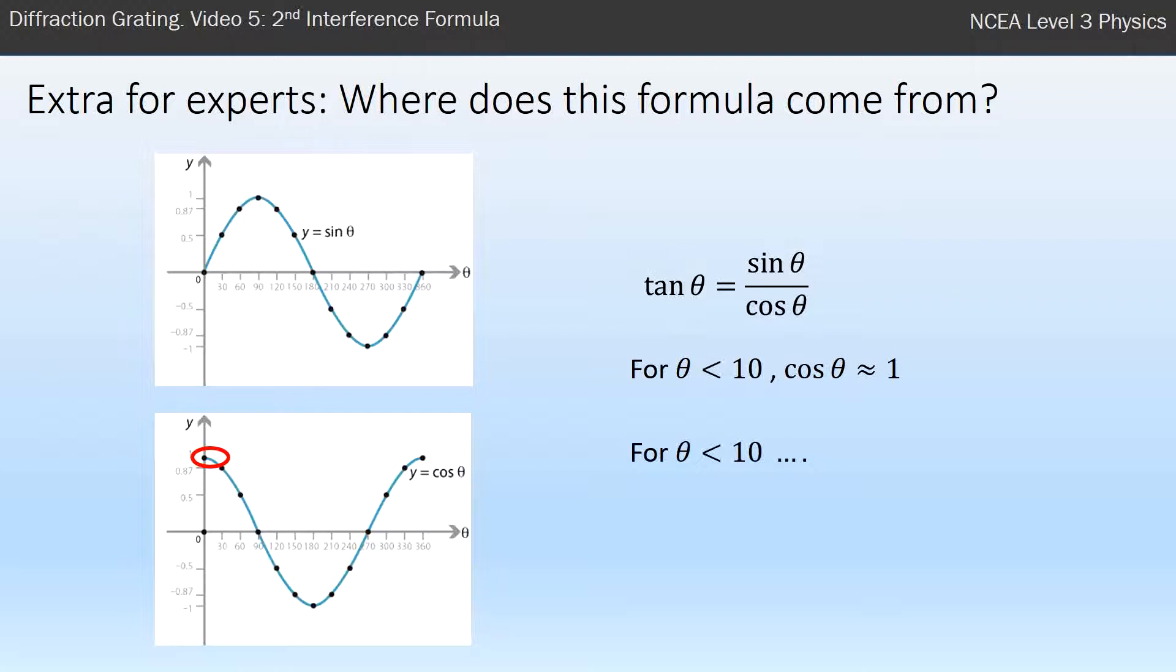So because of that, when that angle is very small, and we know tan is sine over cos, but if cos for small angles is 1, then at very small angles tan is approximately equal to sine.